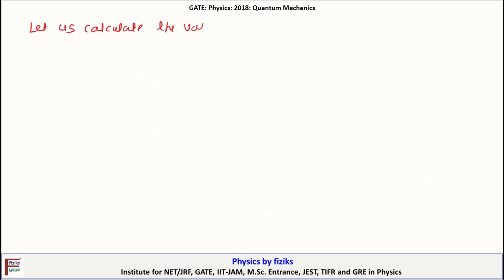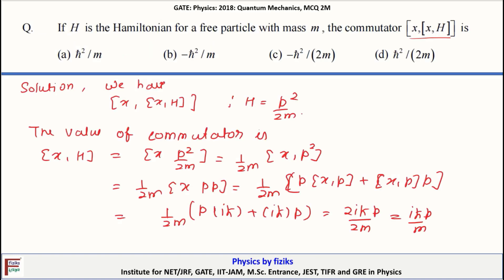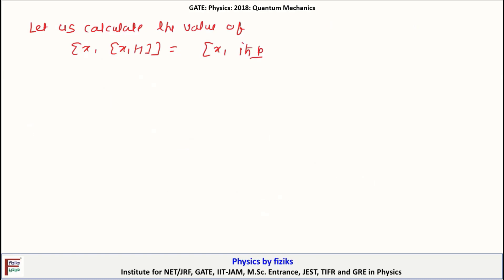Now let us calculate the value of [X, [X, H]]. This equals [X, iħ P/M], and since [X, H] = iħ P/M, the commutator [X, [X, H]] = (iħ/M) [X, P] = (iħ/M)(iħ) = −ħ²/M.